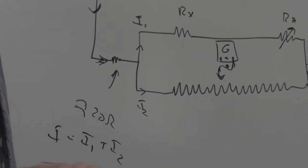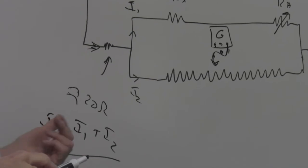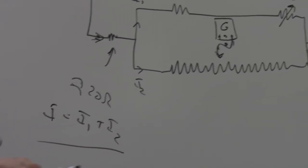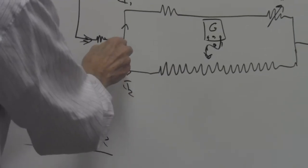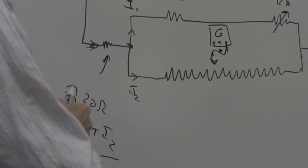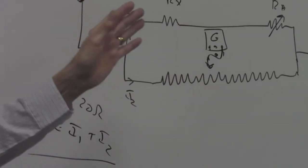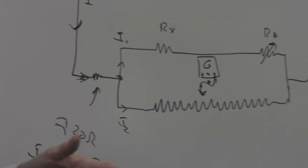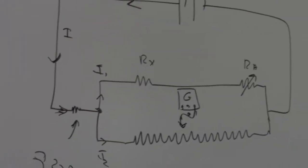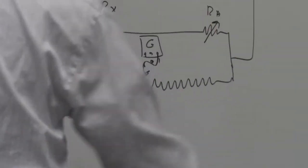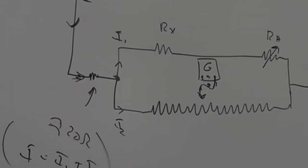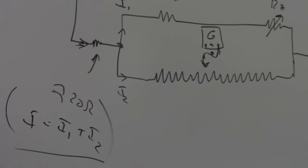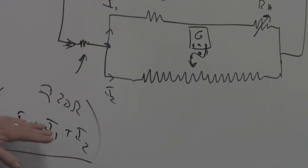When we talk about Kirchhoff's rules, this is actually one of them. When a current comes in and splits at a junction, it either goes one way or the other — just like cars at an intersection. And all charges come back together on the other side.